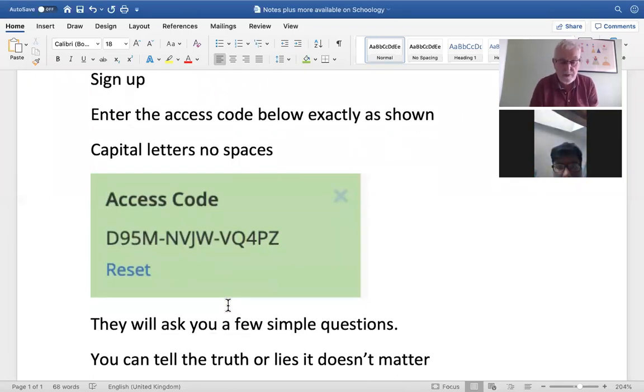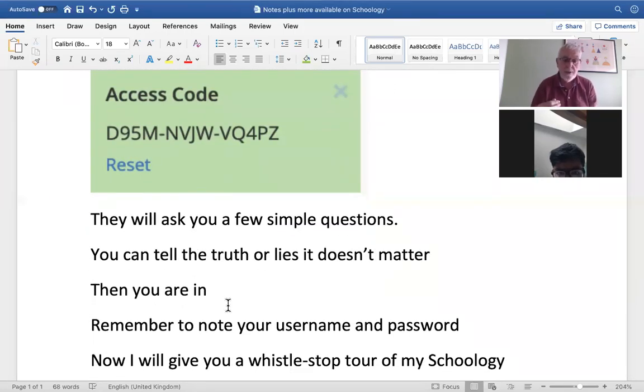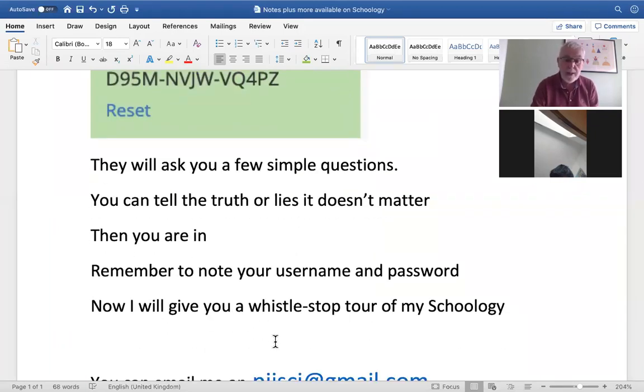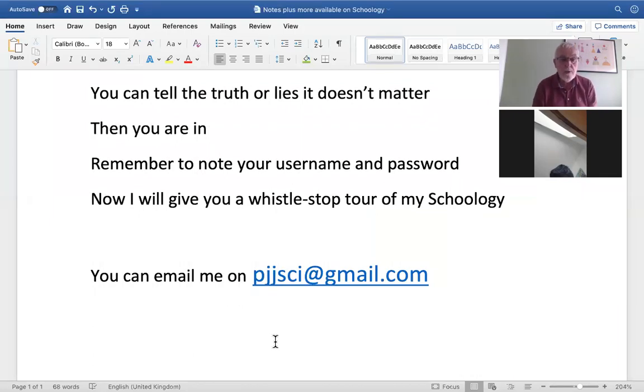It's all capital letters and there are no spaces. So it's D95M-NVJW-VQ4PZ. A couple of people yesterday put the W down as a name. So you've got to get that exactly right or they won't let you in. When you enter that, they will ask you a few questions about yourself. That you can email me up with questions and so on.